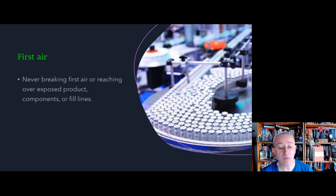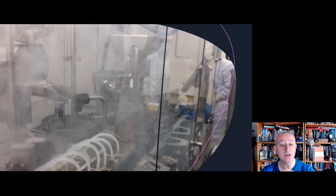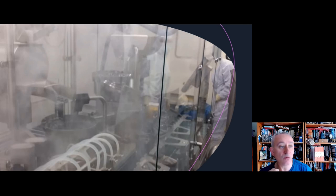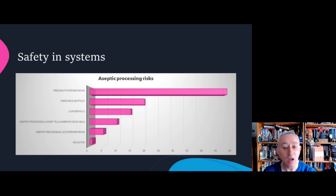An intervention is one thing that can disrupt first air. We can show first air through things like smoke studies, as an example on the screen there. It's important that tasks are performed correctly and executed in a particular way. If procedures are not followed correctly, even the most watertight quality system will fail. We can get an idea of the relative nature of systems and the risks of interventions from a graph I've put together.